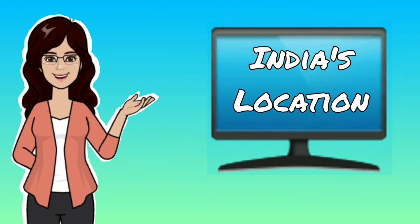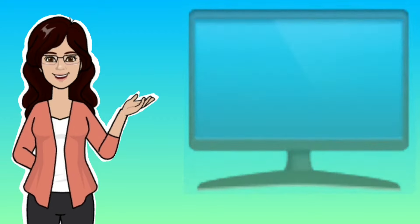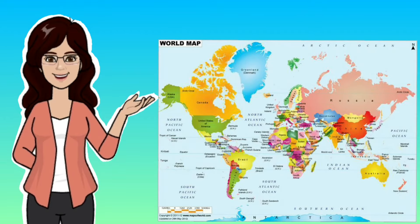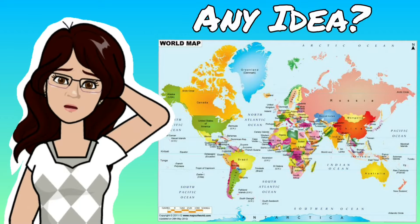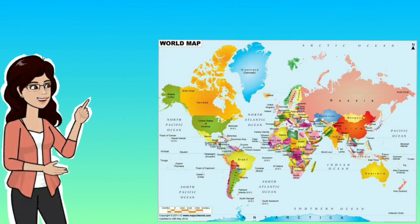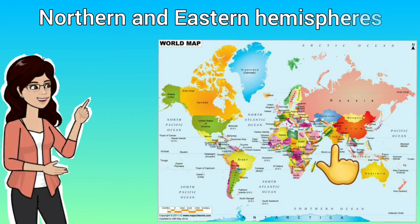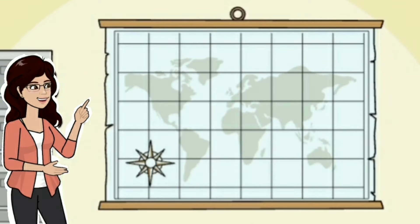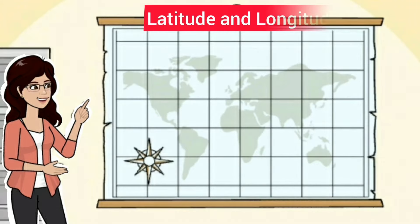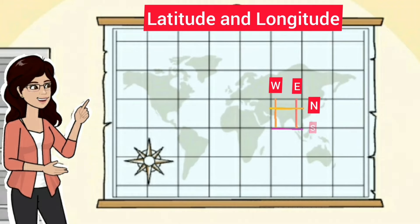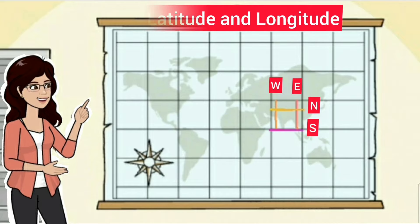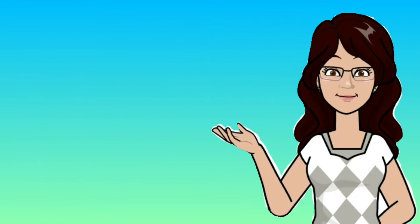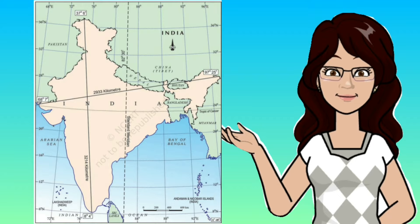In this video we are going to learn about India's location — where India is located on the world map. It is located in the northern and eastern hemisphere. To know the exact location, you need to find out the latitudes and longitudes touching the easternmost, westernmost, northernmost and southernmost points of the country. Let us have a look at the latitudinal and longitudinal extent.